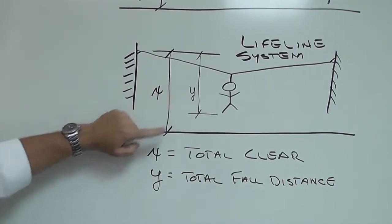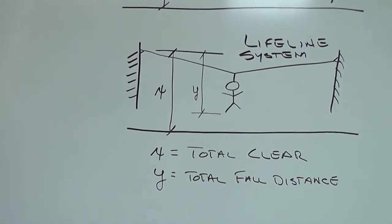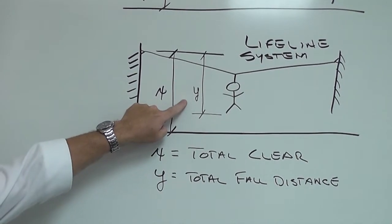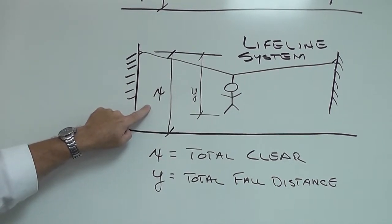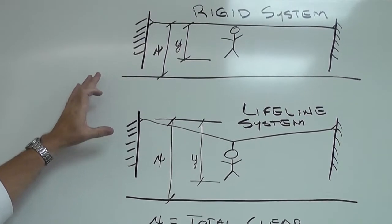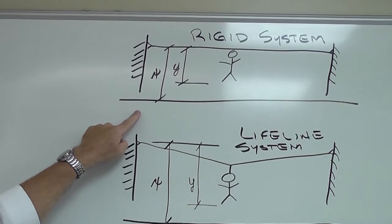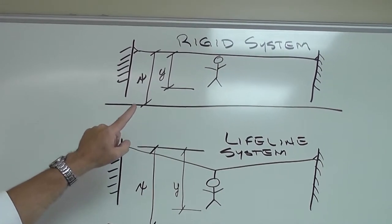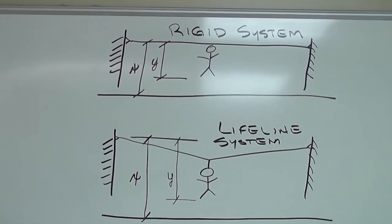Your Y dimension is the actual total fall distance. In several instances the Y dimension for the total fall can exceed the total clear dimension. In a rigid system it's very common that your fall distance is never going to exceed the total clear distance because in a rigid system the fall is arrested much quicker because there's no absorption to the system.